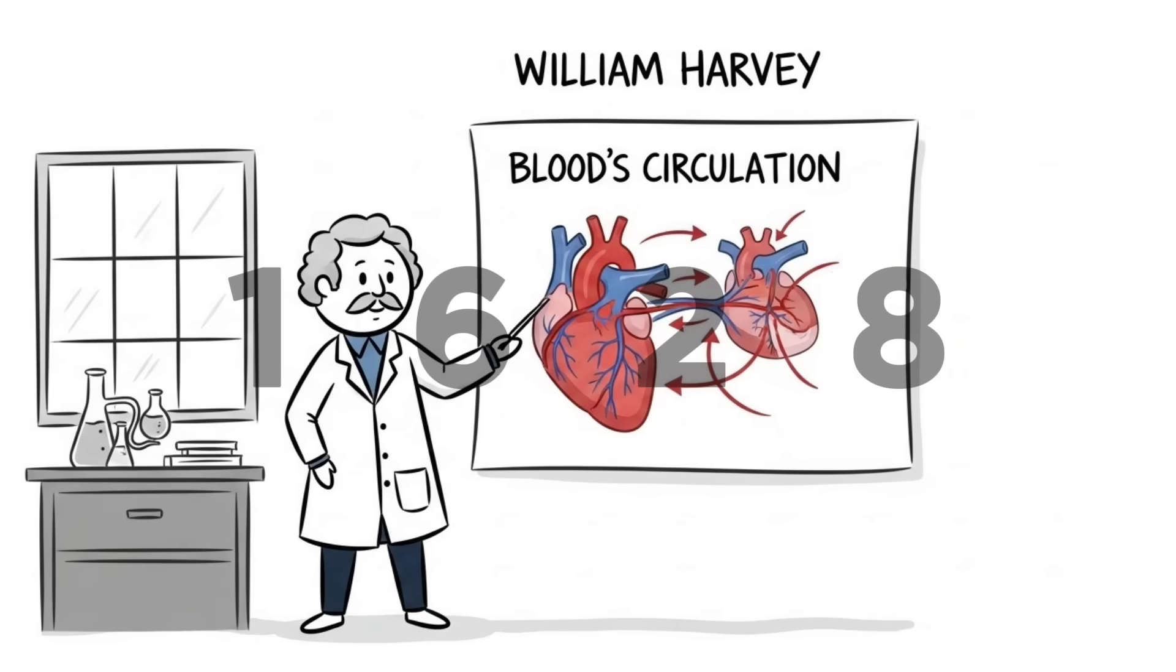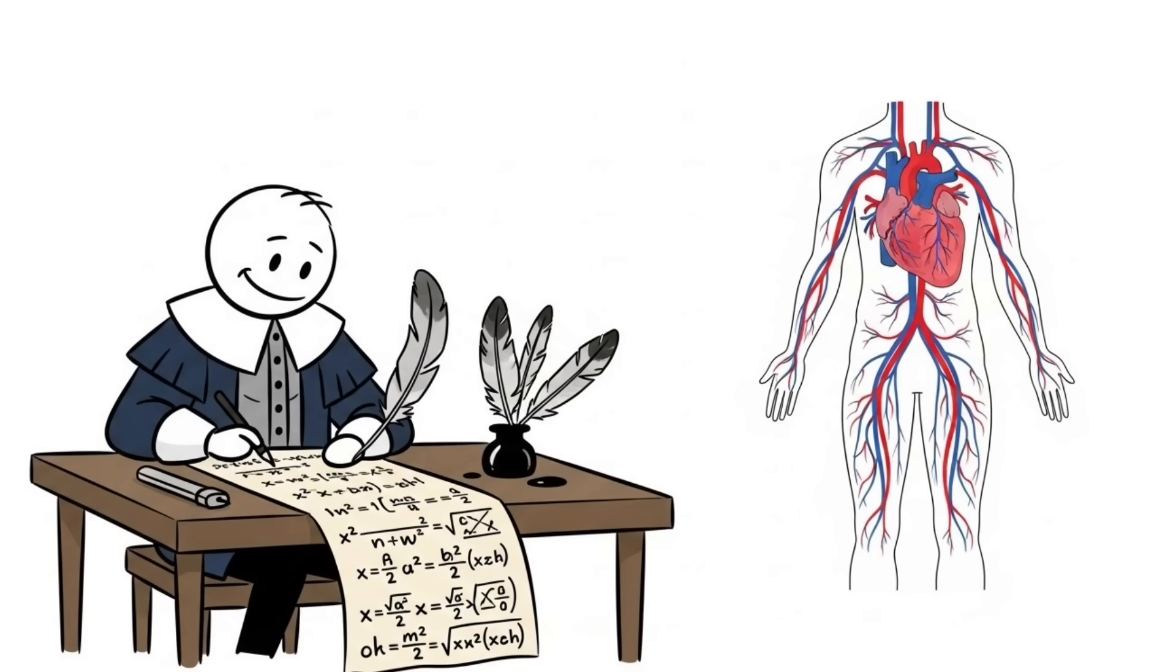In 1628, William Harvey proposed a crazy new theory. The heart is a pump and blood circulates in a closed loop. He'd done the math. The heart pumps way too much blood for the body to be constantly consuming it.